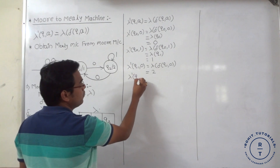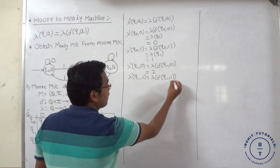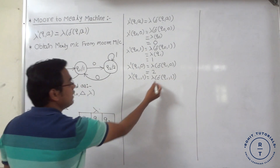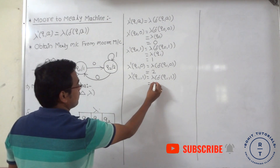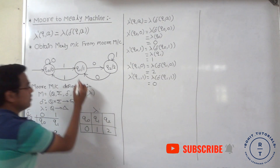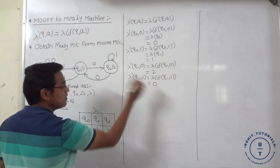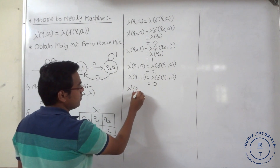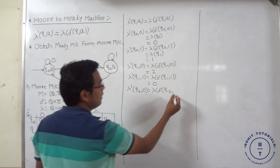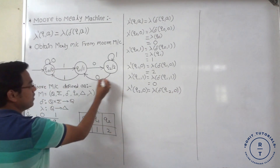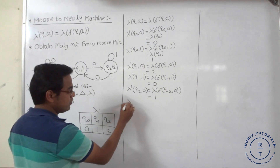Lambda dash(q1, 1) equals lambda of transition function q1 with input 1. At q1 state, when 1 occurs, it goes to q0. At q0 state, the output is 0. So lambda dash(q1, 1) = 0. Next, lambda dash(q2, 0): lambda of transition function q2 with input 0. At q2 state, when 0 occurs, it goes to q1. At q1 state, the output is 1. So lambda dash(q2, 0) = 1.